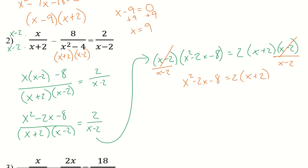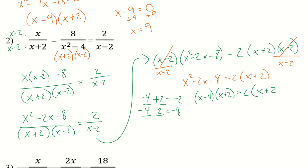I'll factor x squared minus 2x minus 8. I need two numbers that add to negative 2 and multiply to negative 8, so negative 4 and positive 2. That gives me x minus 4 times x plus 2 equals 2 times x plus 2. The x plus 2 terms cancel, leaving x minus 4 equals 2. Adding 4 to both sides: x equals 6.